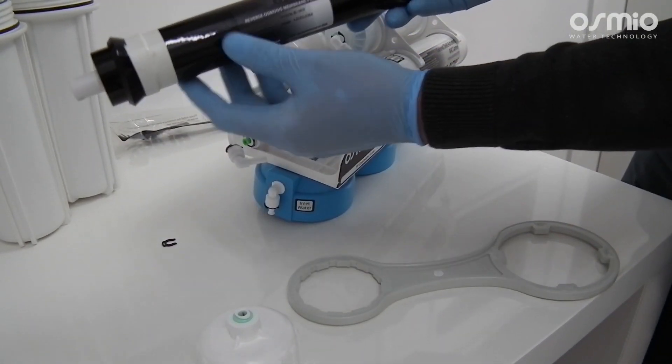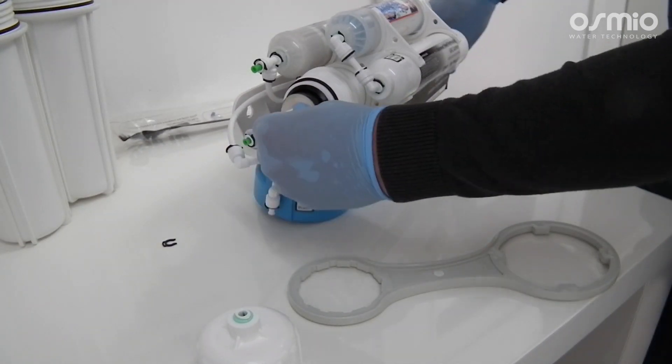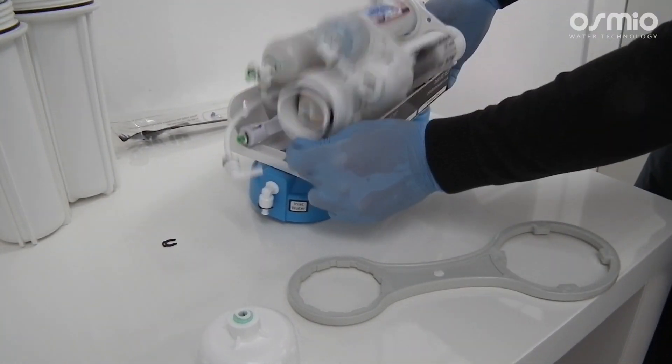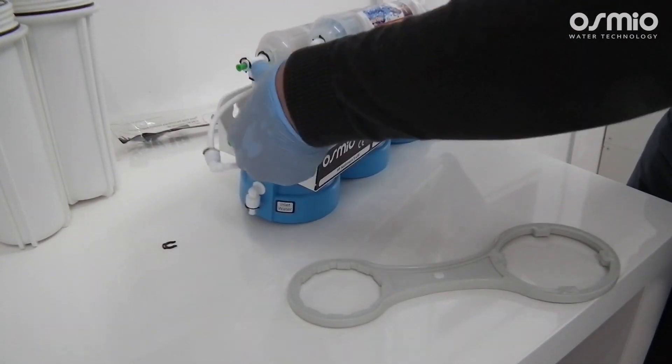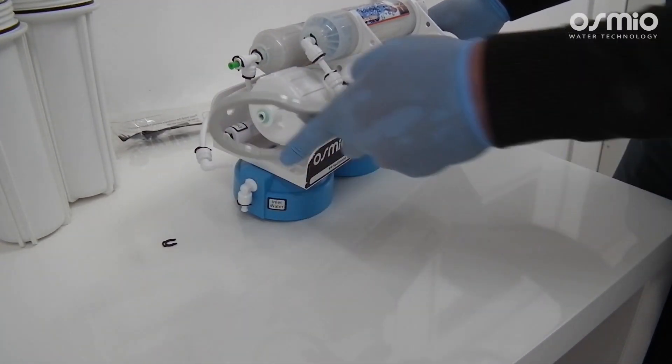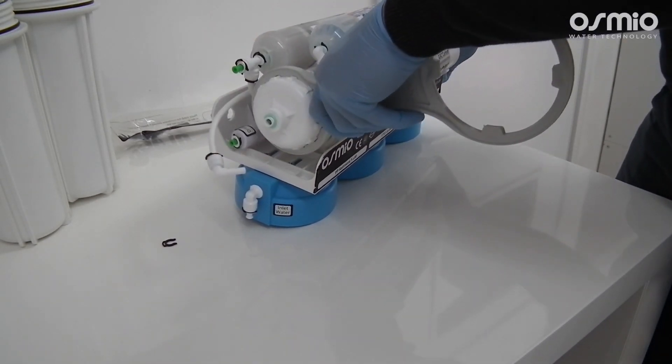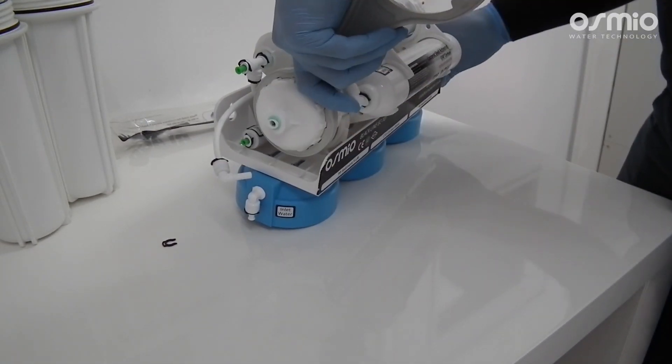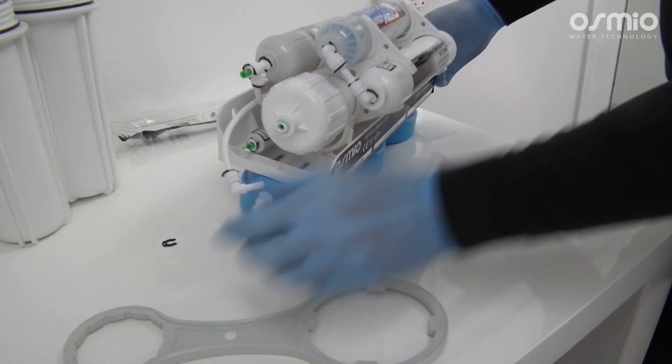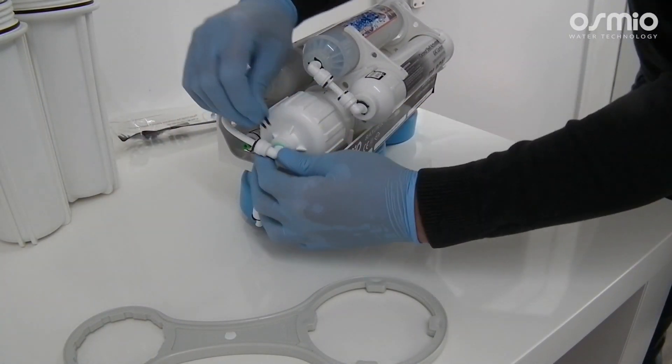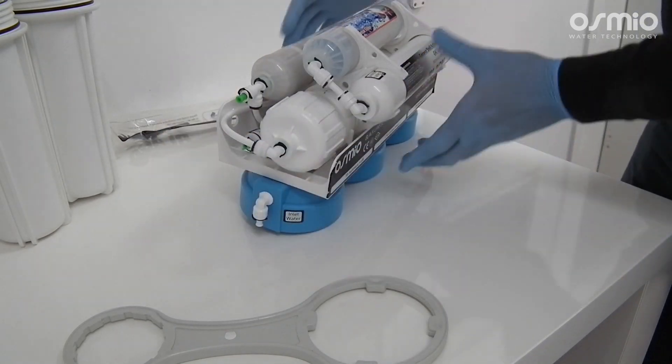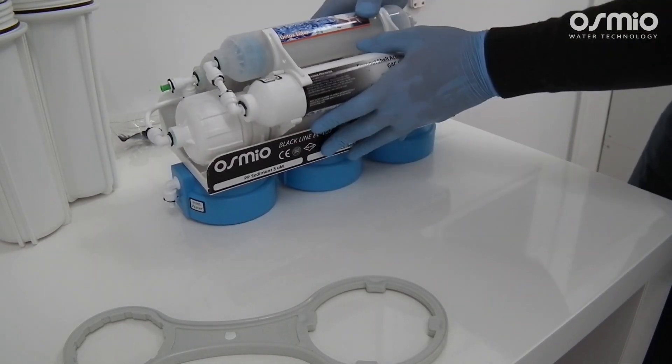Now take the membrane and slide it into the membrane housing with the narrow side with two o-rings facing front. Close the membrane cap, screw it onto the membrane housing, and tighten it with a wrench to secure it properly and avoid any leaks. Now fit back the elbow fitting and place back all the clips removed.